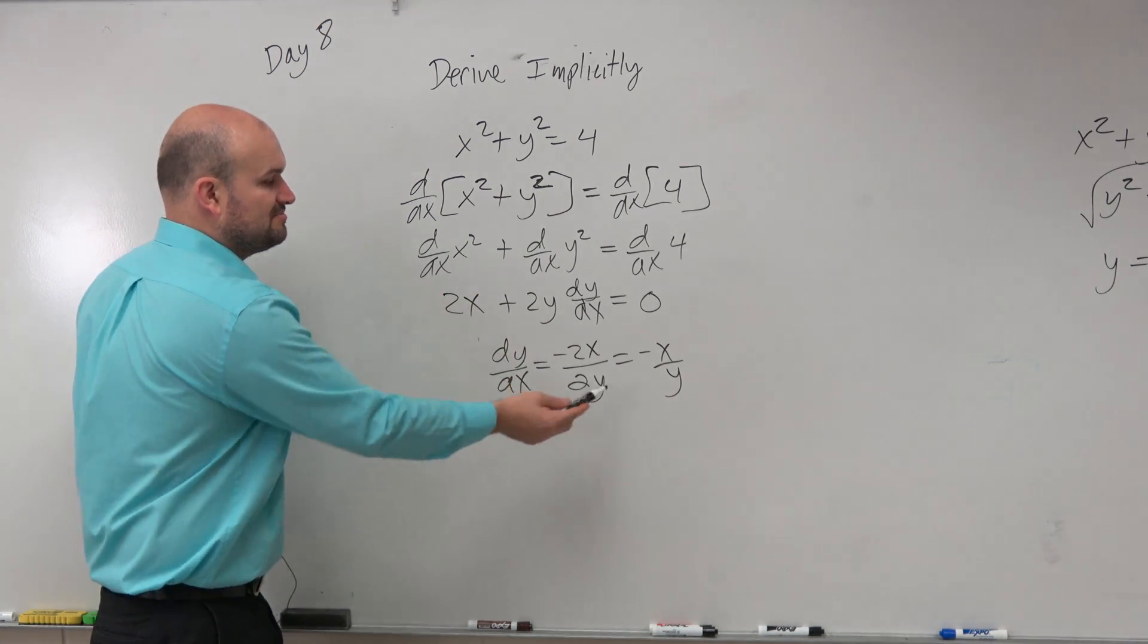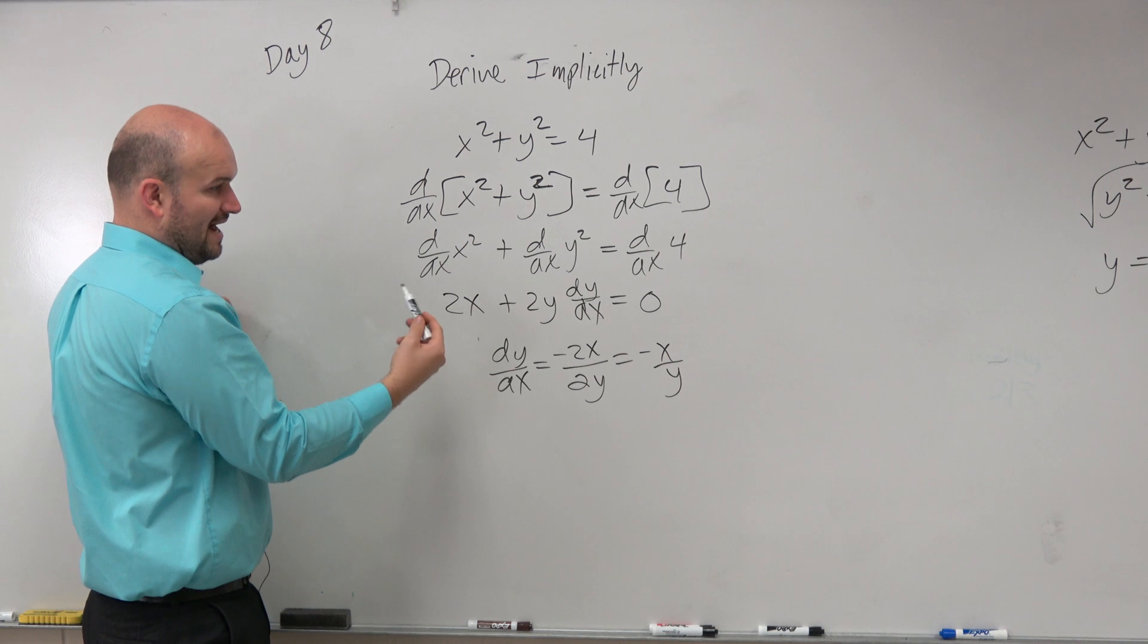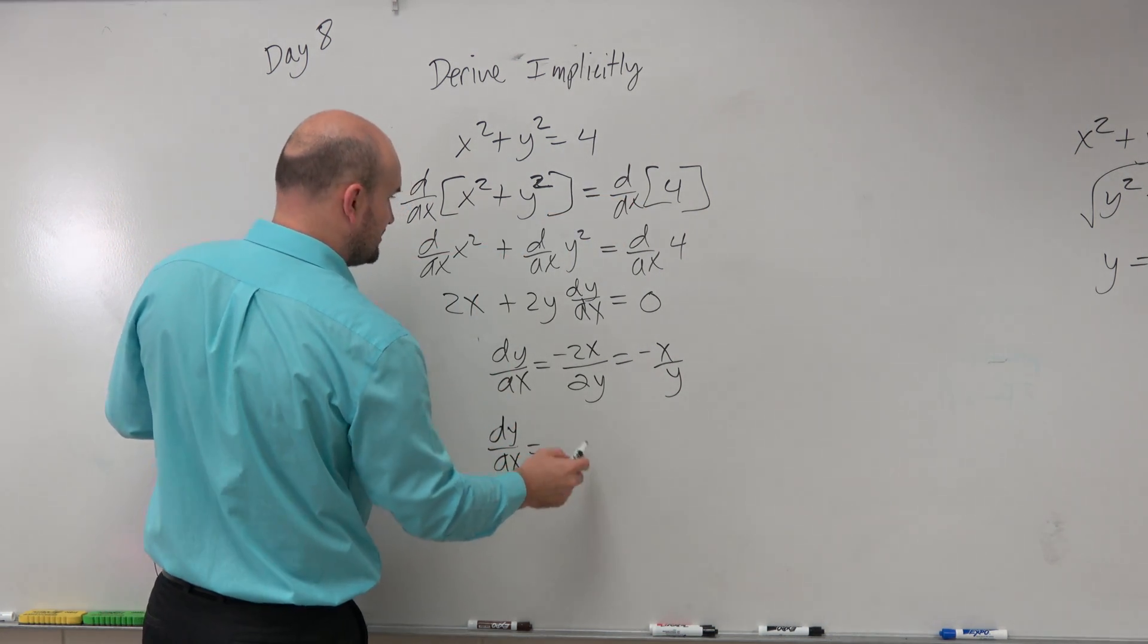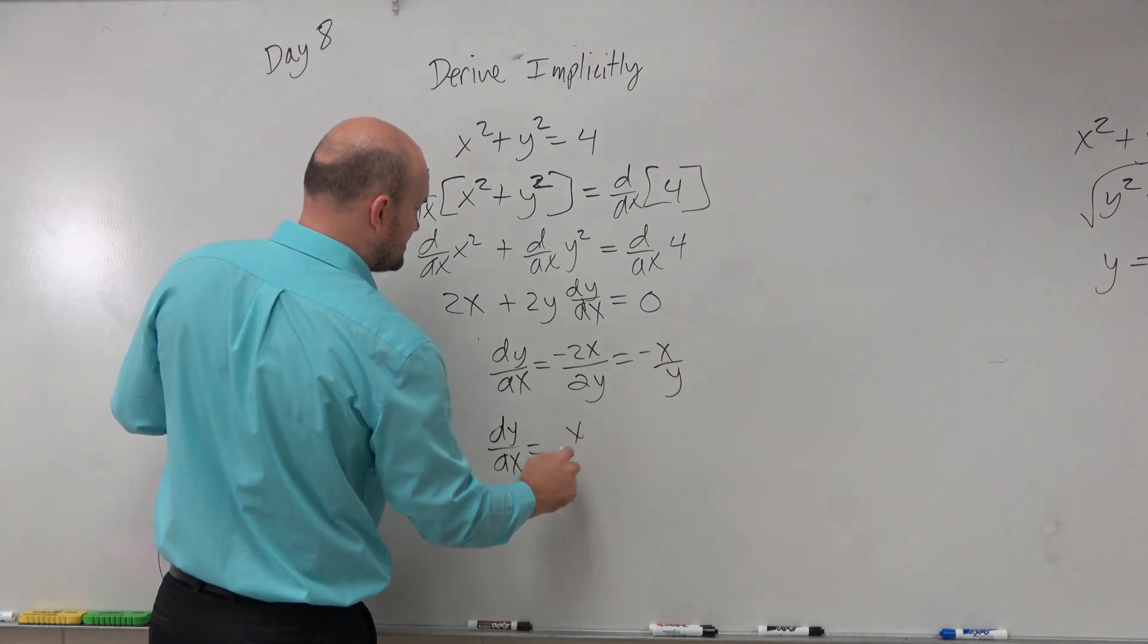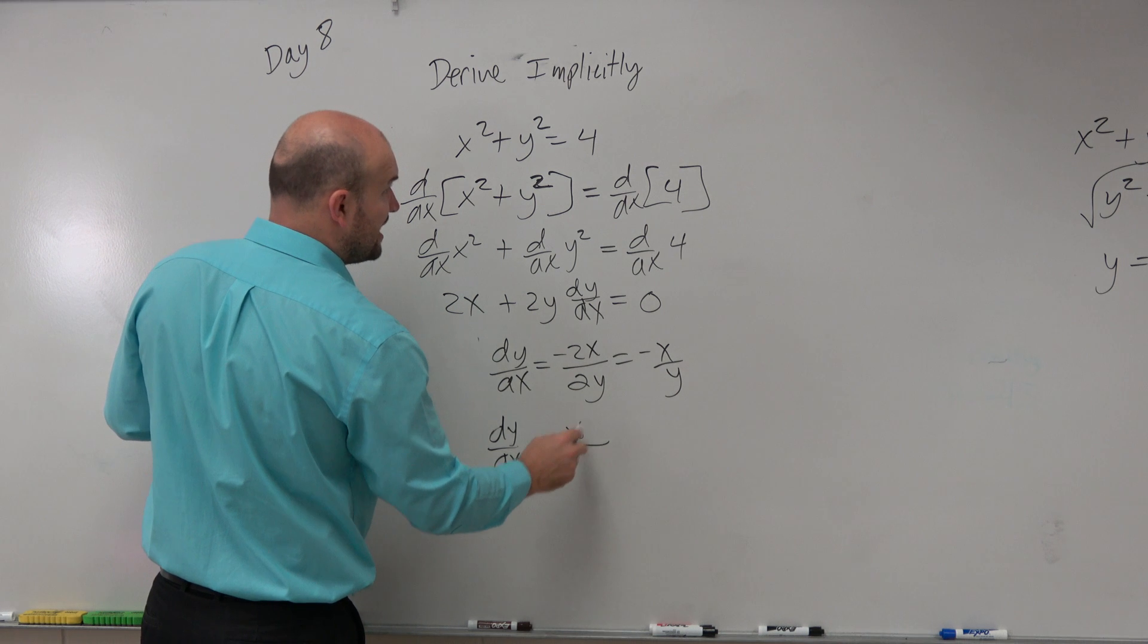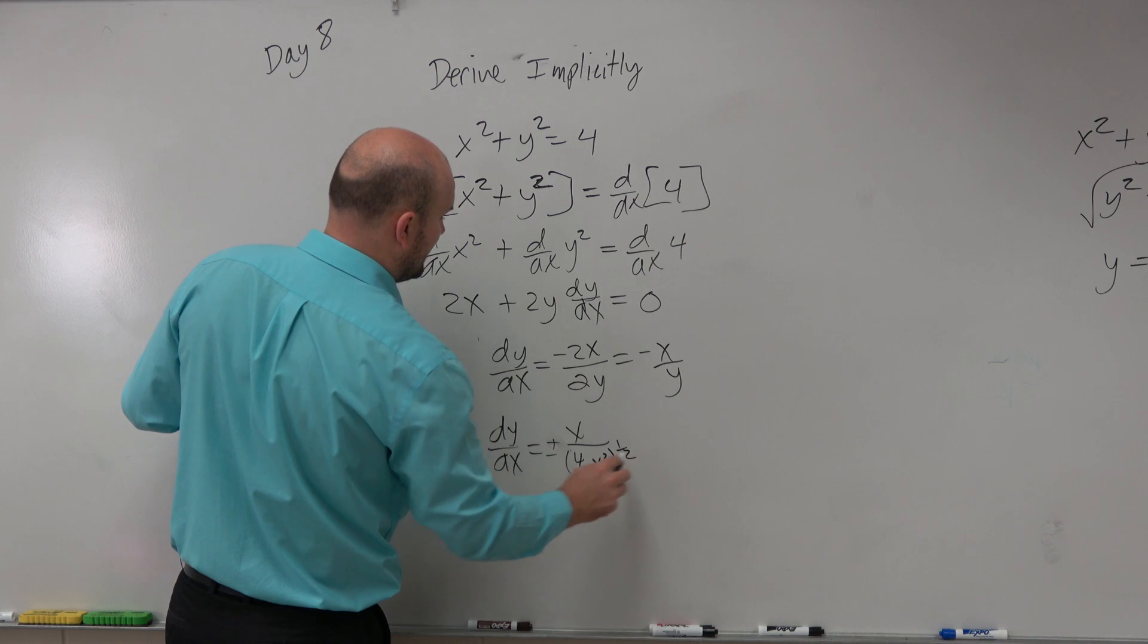Now, remember, we can always plug back in what y is, or what y is equal to. And since we solved it over there, dy over dx is equal to negative x over, now again, we have a plus or minus, plus or minus what y is equal to, which is 4 minus x squared raised to the 1 half.